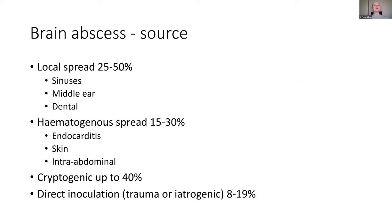Where do brain abscesses come from? Up to half the time they can come from a local disease such as sinusitis, middle ear infection, or a dental abscess. They can be hematogenous, typically from infective endocarditis, but even a small skin abrasion can be enough to spread bacteria to the brain. They can be cryptogenic in 40% of cases — we don't even know where the infection came from. There can also be direct inoculation: a laceration that gets infected, a head injury, or post-surgical.